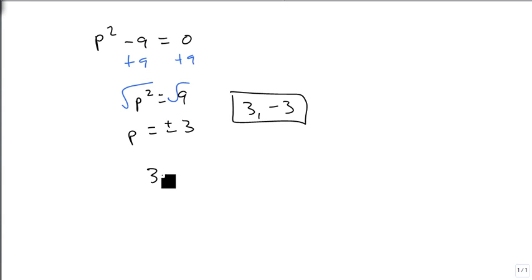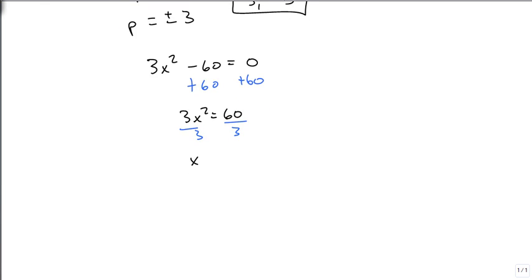We could also look at 3x squared minus 60 equals 0. So we start by getting what is being squared by itself. So 3x squared equals 60. Divide by 3. Get x squared equals 20. Take the square root of both sides. Remember that since we're taking the square root of both sides, we need the plus or minus.